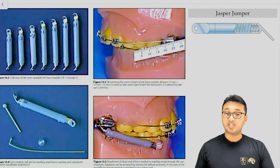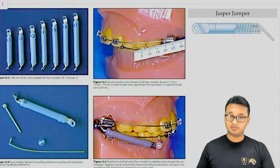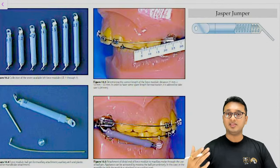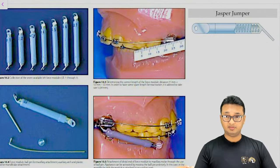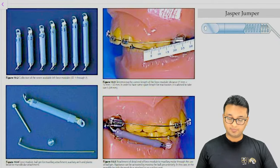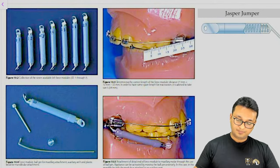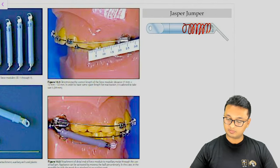The second option was the Jasper Jumper. When you look at the image in an image-based question, the basic difference that should come to mind is the architecture of the appliance. The Jasper Jumper is composed of a nickel titanium super-elastic coil spring — specifically a NiTi coil spring.